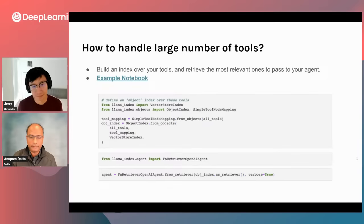To wrap up, the key takeaway is the agent quad for evaluating LLM agents for hallucinations — very closely related to the RAG triad but with this additional step of tool selection and checking. This includes evaluating that the right tool was selected and that the query was appropriately translated. Then we go into context relevance, groundedness, and answer relevance as we just walked through.